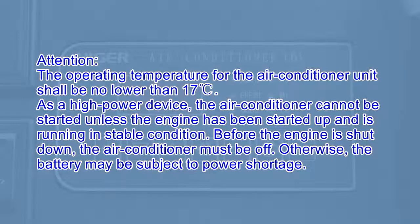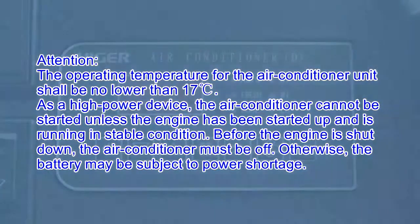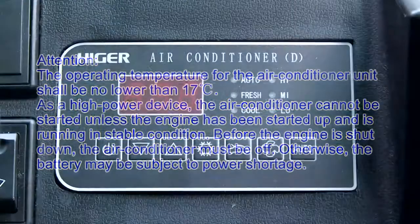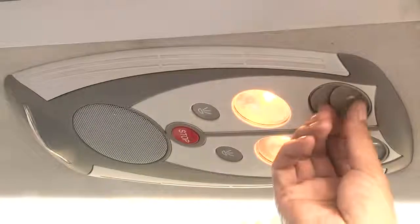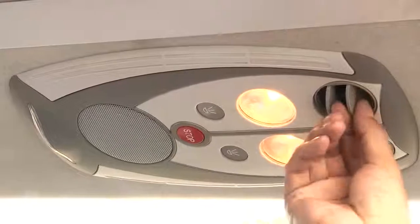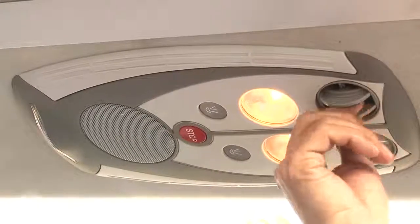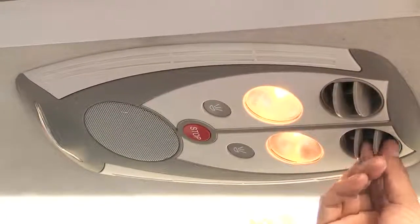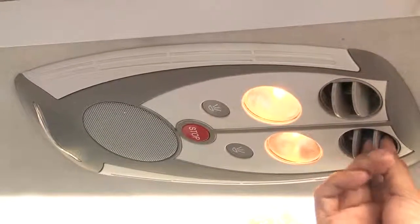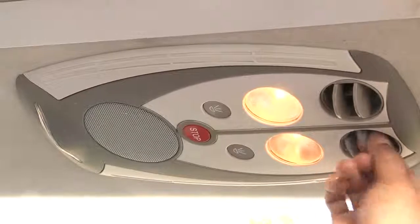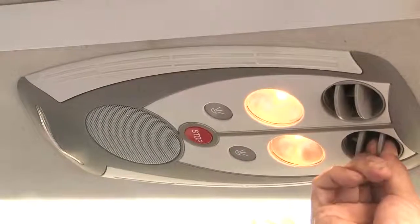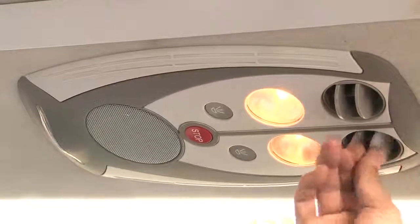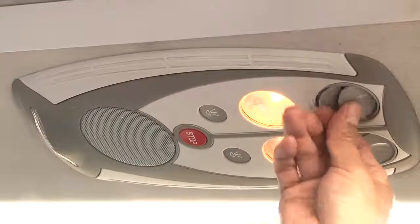Otherwise, the battery may be subject to power shortage. The air conditioning outlet is located on the passenger control panel, which can be used to adjust the air flow and direction.